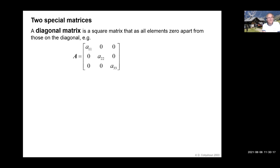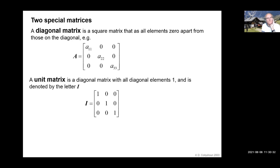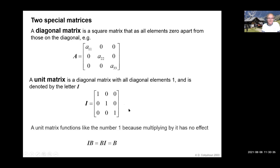Now two special matrices. A diagonal matrix is a square matrix that has all its elements zero except those on the diagonal, and it has special simple properties. An even simpler diagonal matrix is one with the diagonal elements all one. That's denoted by the letter I, bold italic I. This unit matrix functions like the number one because multiplying by it has no effect. I times B equals B times I, which is just B.